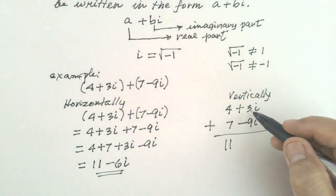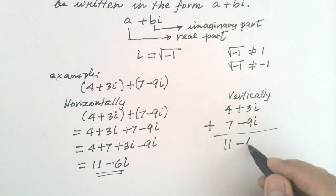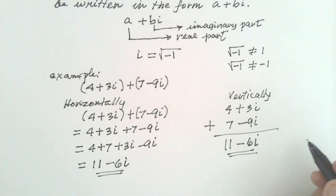And then, positive 3, negative 9 is negative 6I. So, this is the answer. 11 minus 6I. Thank you.